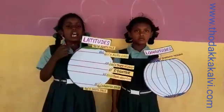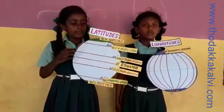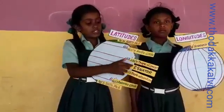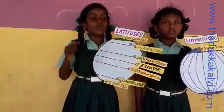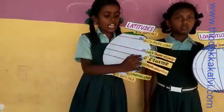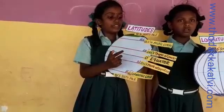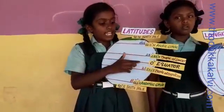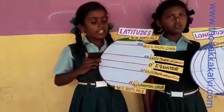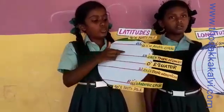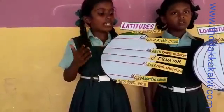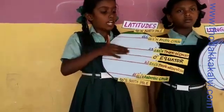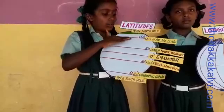Latitudes. Latitudes are imaginary circles running from east to west. One such imaginary line of latitude is the equator. The equator divides the earth into two equal halves known as hemispheres. The northern part of the earth above the equator is known as the northern hemisphere.